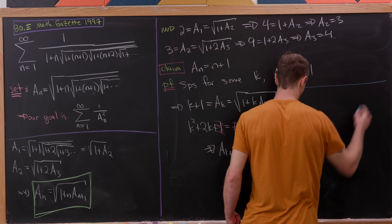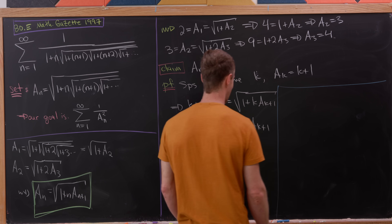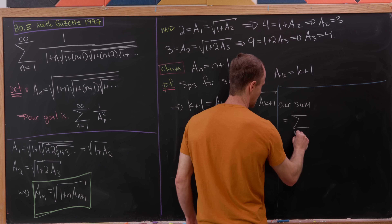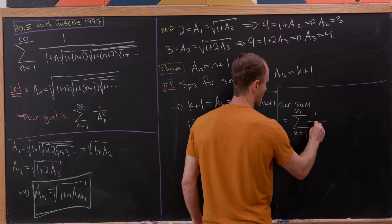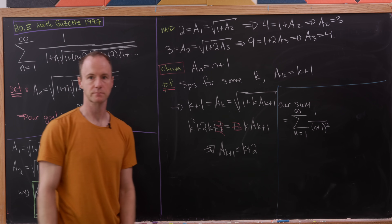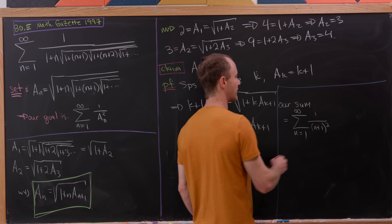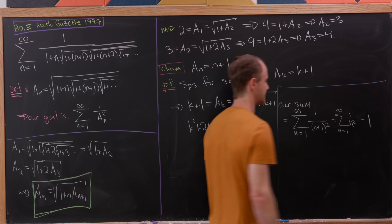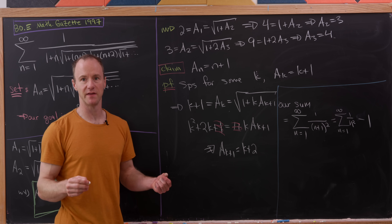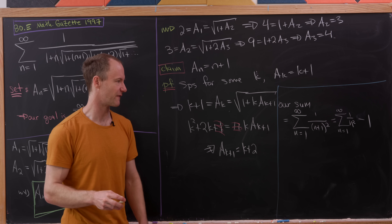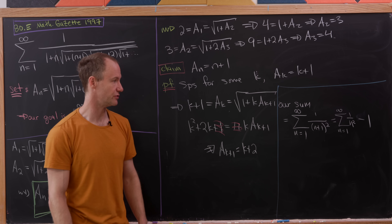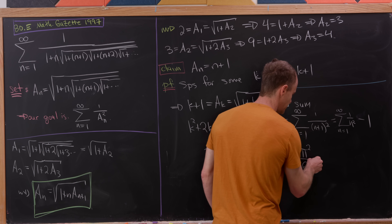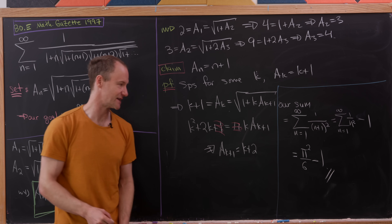Now we know all values of A sub n, so we can compute our sum. It collapses to the sum as n goes from 1 to infinity of 1 over (n plus 1) squared. By re-indexing, that's the same as the sum as n goes from 1 to infinity of 1 over n squared, minus 1 — since we differ from the full sum simply by the first term, given that A sub 1 equals 2. This is the well-known Basel problem, whose sum equals pi squared over 6. So our final answer is pi squared over 6 minus 1.